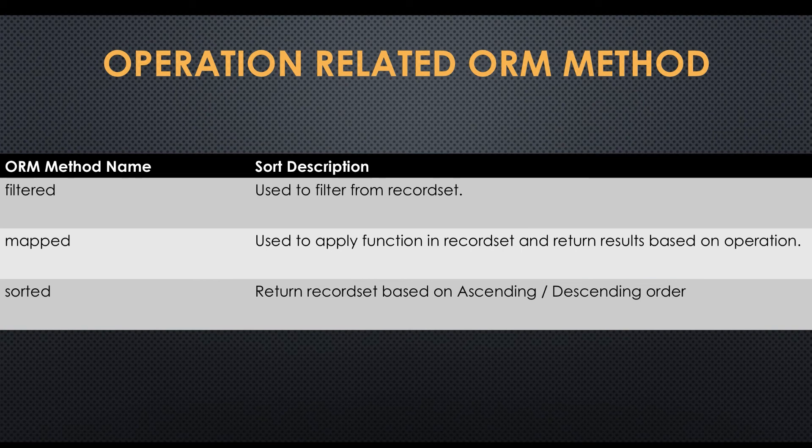In this screen you can see filter and sorting related methods. The filtered method will help to filter records from a record set. The mapped method is used to apply a function on a record set and return results based on the operation. The last method is sorted — this method will help you sort a record set based on a key.